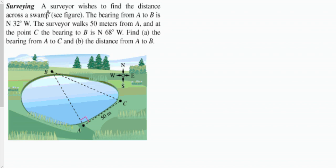Let's look at the problem. A surveyor wishes to find a distance across a swamp, so we're really looking for the distance across the swamp. The bearing from A to B is North.